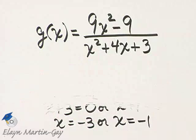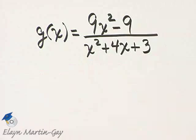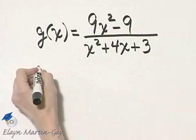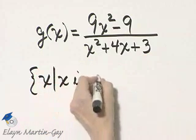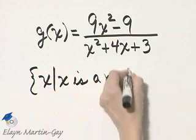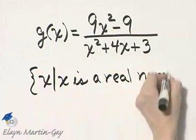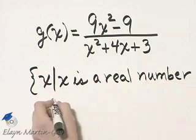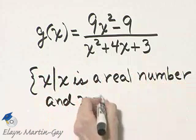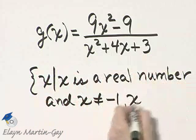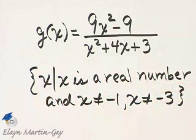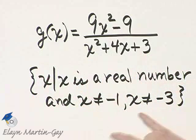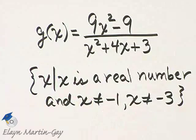So what will we let the domain be? The domain will be the set of all x such that x is a real number and what? And x is not equal to negative 1, also x is not equal to negative 3. Any other real numbers except for these two are okay values for x.